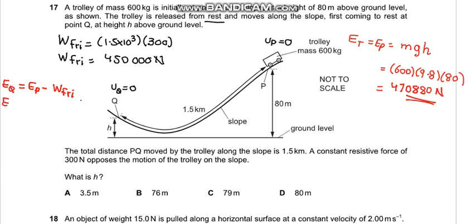So the energy at Q becomes potential energy at P which is 470,880 minus the frictional force which is 450,000. So this becomes 20,880.